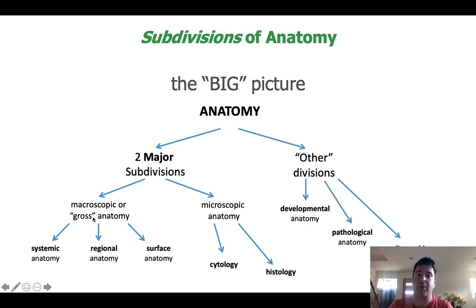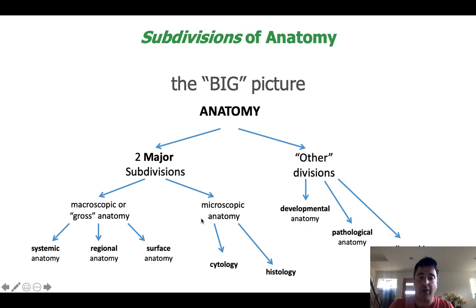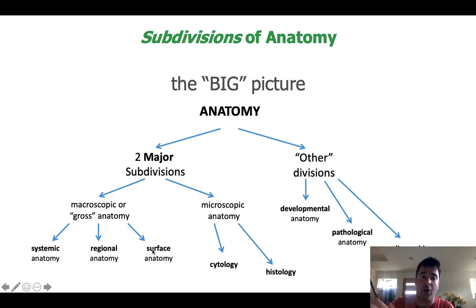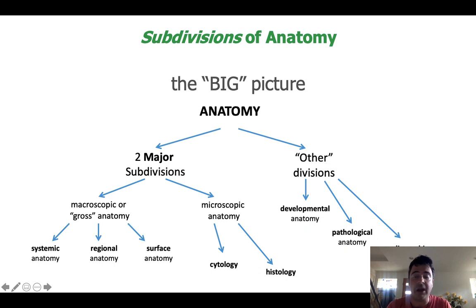Macroscopic or gross anatomy — when I use terms like macroscopic or gross, it doesn't mean gross like 'ew' — it's talking about structures you can see with the unaided eye. Microscopic anatomy, on the other hand, is about structures too small to be seen with the unaided eye, so we need a microscope. Those are our two major subdivisions. Macroscopic anatomy can be broken into systemic, regional, and surface anatomy. Microscopic anatomy can be broken into cytology — the study of cells — and histology — the study of tissues. We also have other subdivisions like developmental anatomy, pathological anatomy, and radiographic anatomy, and we'll go through each one.